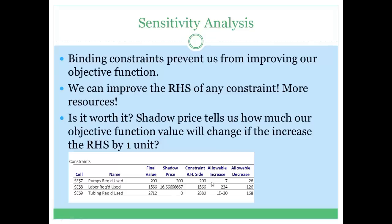One thing we can't get from shadow price is our new optimal solution. Once we change the right-hand side of constraint 1, we have more resources and can produce more, improving our objective function value, but we don't know which product to make more of. So in order to figure that out, we need to rerun the problem to find the values of the decision variables. Shadow price tells us how the objective function value changes if we increase the right-hand side by a single unit, but it does not tell us how the optimal solution will look.